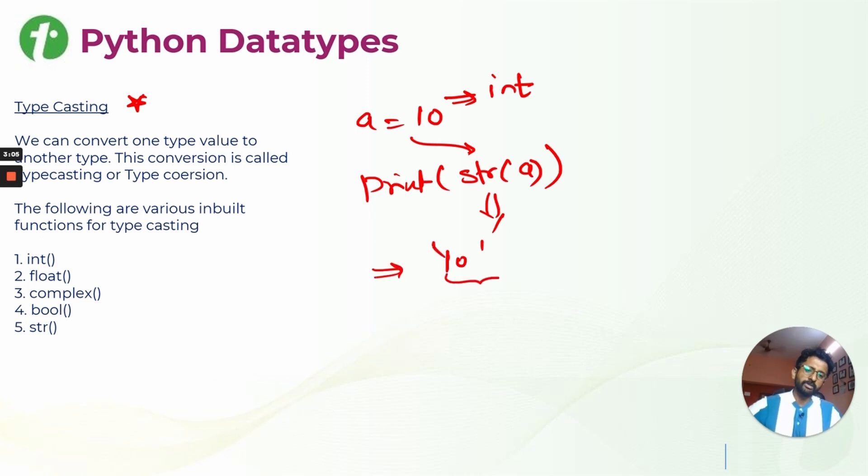For example, I have a equals 10. I know by default, using dynamic typing, it is integer. But now I want to convert this a into string. How will I do? I will do str of a. Whenever I do this, it will print 10 but in quotes, so that will be output as a string. You converted integer into string by type casting using the default function str.